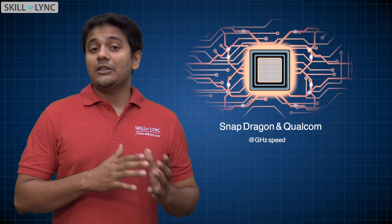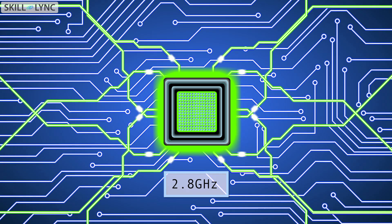Modern processors like Snapdragon and Qualcomm operate at gigahertz speeds, meaning they are 1000 times faster than megahertz processors. The Snapdragon 845, the latest of its kind, operates at a speed of 2.8 gigahertz.